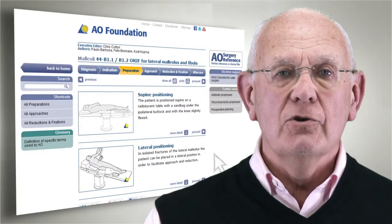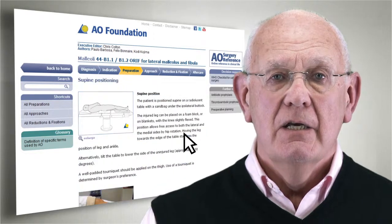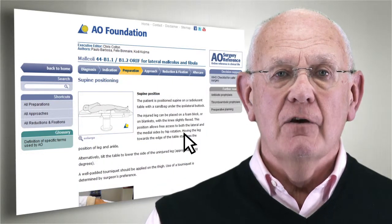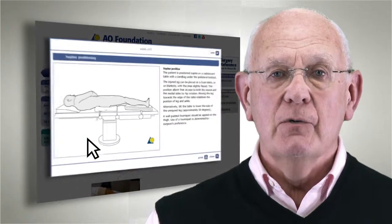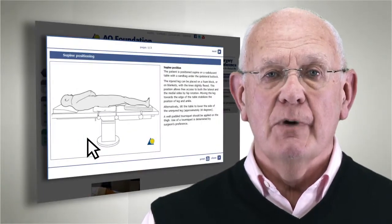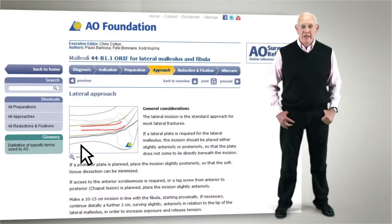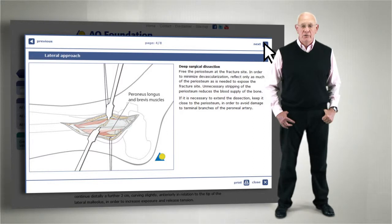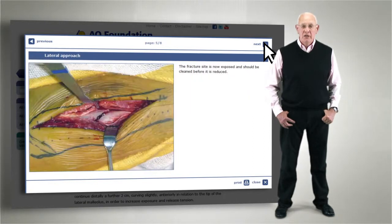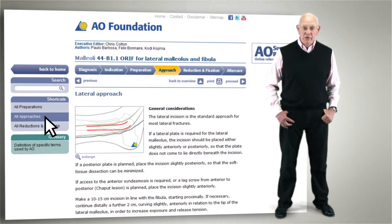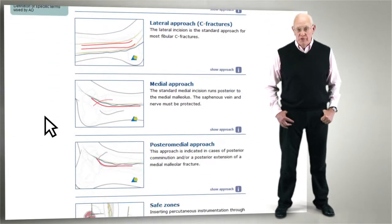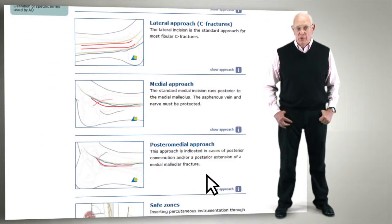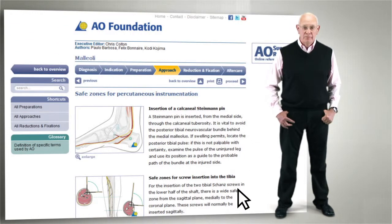Once your treatment decision has been made, you can then follow the surgical process starting with information on patient positioning. As a next step, any relevant approaches that are associated with your chosen treatment are shown in detail. You can also select an overview of all approaches offered for this module and review them all.